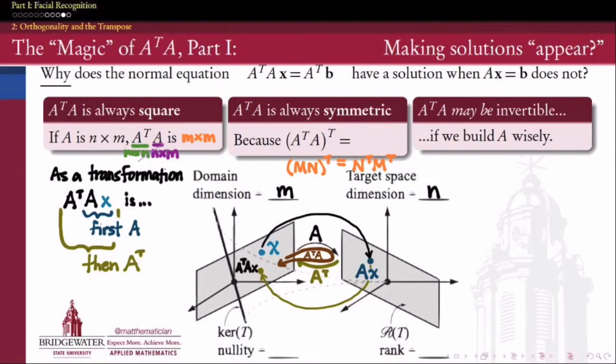Applying that to A transpose A, I'm going to get A first, A transpose second, and then each of those transposed. But since the transpose of the transpose of a matrix gives us the original matrix back, A transpose A, transposed, is equal to A transpose A. Say that ten times fast.